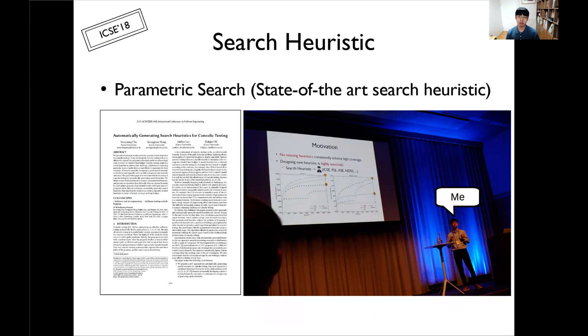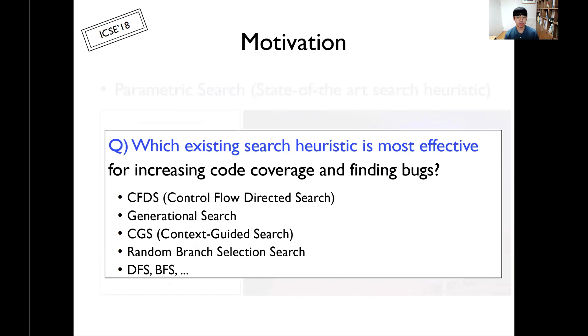The next search heuristic is the parametric search heuristic, known as the state-of-the-art technique in concolic testing. As you can see, this was my research work presented at ICSE 2018. Let me explain this technique in a little bit more detail. My work came from curiosity about these questions. As we learned so far, many different search heuristics have been proposed in symbolic execution or concolic testing literature.